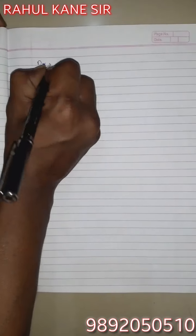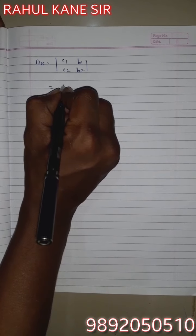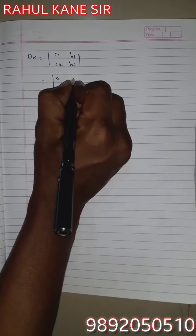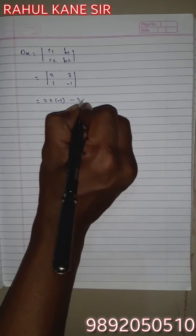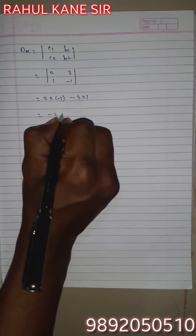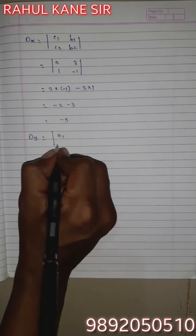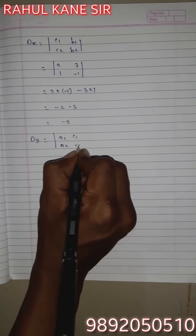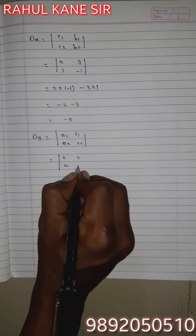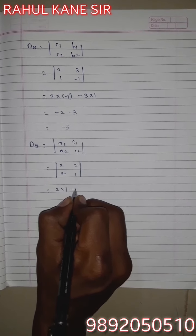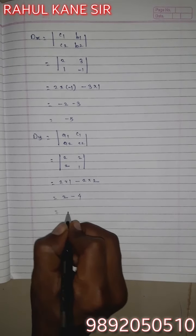Dx equals |c1, c2, b1, b2| equals |2, 1, 3, -1|. By cross multiplication: 2×(-1) minus 3×1. 2 ones are 2, 3 ones are 3. So -2 minus 3 equals -5. Dy equals |a1, a2, c1, c2| equals |2, 2, 2, 1|. By cross multiplication: 2×1 minus 2×2. 2 ones are 2, 2 twos are 4. Equals -2.